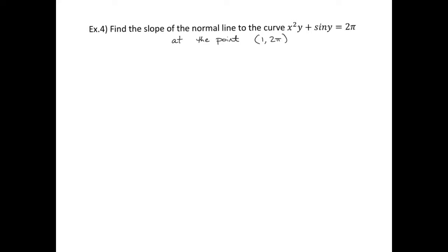In this example we're going to find the slope of the normal line to the curve x²y + sin y = 2π at the point (1, 2π). We're going to start by finding the slope of the tangent line and then doing the opposite reciprocal for the normal line. A normal line is perpendicular to the tangent line.